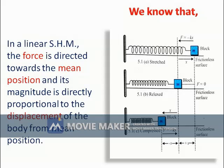Now look at the screen. There is a diagram in which we can see a spring attached to a rigid support, and the free end of the spring is connected to a rigid block. This block is kept on a horizontal table. If the block is pushed outward and released, it will perform simple harmonic motion — a to-and-fro motion. This will be the mean position of the block, and these are the two extreme positions.